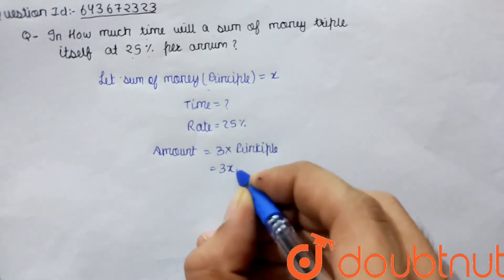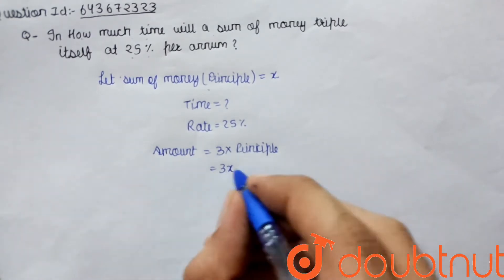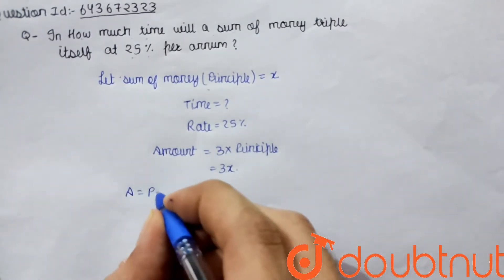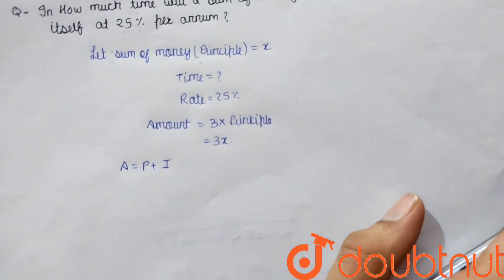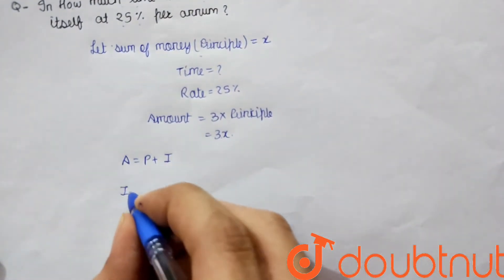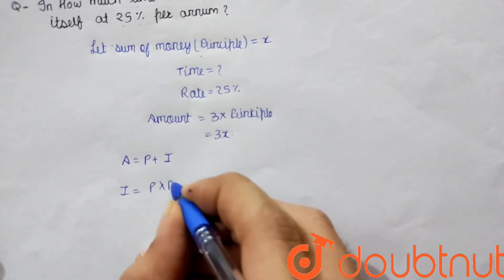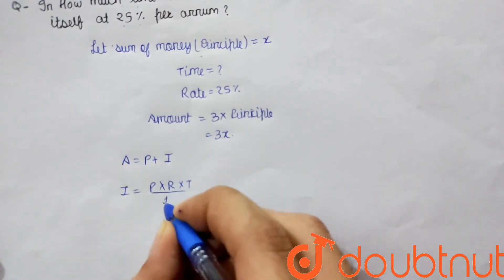Three times the principal means 3X. So amount is 3X. We know that amount equals principal plus interest. First, we need to find the value of interest. Interest is determined by P × R × T ÷ 100.